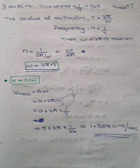Let's take a few problems for Simple Harmonic Motion. First question: a particle vibrates with Simple Harmonic Motion of amplitude 5 cm and time period 24 seconds. Calculate the maximum velocity. Amplitude A is equal to 5 cm, and time period T is equal to 24 seconds. We have to find the maximum velocity.